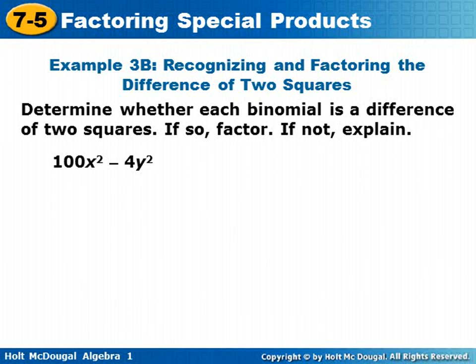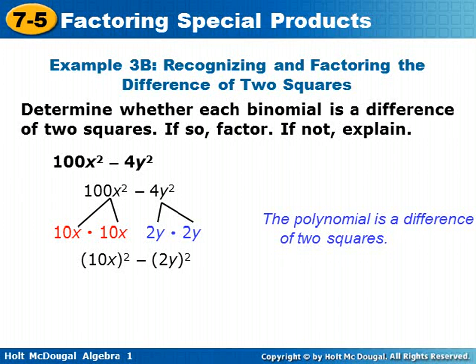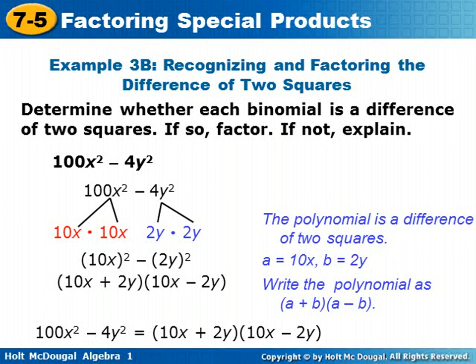Determine whether each binomial is a difference of two squares. If so, factor. If not, explain. For 100x squared minus 4y squared: 100x squared is a perfect square — 10x times 10x, or 10x squared. 4y squared can be broken into 2y times 2y, or 2y squared. The polynomial is a difference of two squares. Our a term is 10x and our b term is 2y, so we write it as a plus b times a minus b: 10x plus 2y times 10x minus 2y. So 100x squared minus 4y squared equals 10x plus 2y times 10x minus 2y.